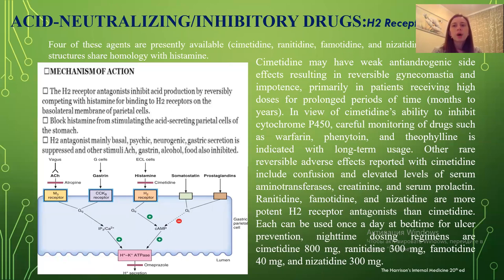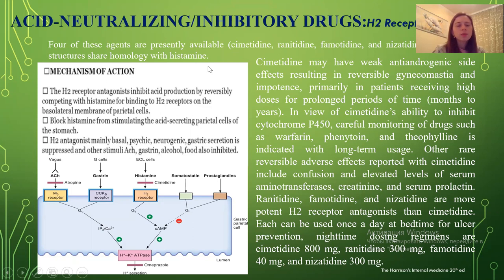Regarding H2 receptor antagonists: four agents are presently available — cimetidine, ranitidine, famotidine, and nizatidine. Their structures share homology with histamine. The mechanism of action is that H2 receptor antagonists inhibit acid production by competitively binding with histamine for binding to H2 receptors of the basolateral membrane of parietal cells, thereby blocking histamine from stimulating acid-secreting parietal cells. H2 antagonists mainly suppress basal, psychic, neurogenic, and nocturnal gastric secretion. Other stimuli such as gastrin, alcohol, and food are also inhibited.